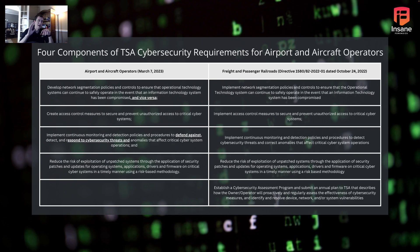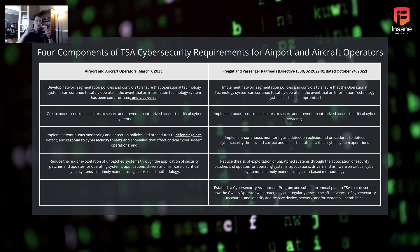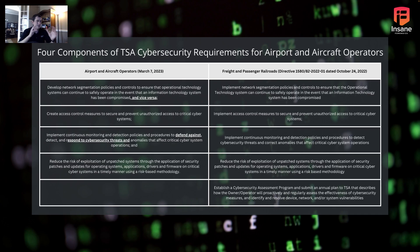The patching side was very similar across both — operating systems, applications, drivers, and firmware were specifically called out, using a risk-based methodology like CVE scores. One interesting difference: freight and passenger railroad operators have to have an assessment program and submit annual plans to TSA on how they're proactively assessing cybersecurity measures, controls, and device, network, and system vulnerabilities. This wasn't in the airport press release, but the similarity between the two regulations is so close that it will likely appear in the final directive.